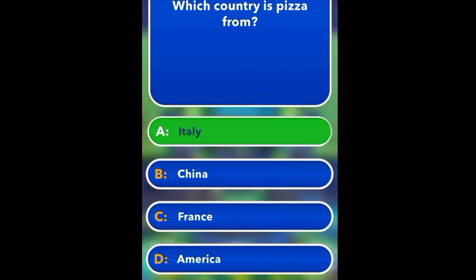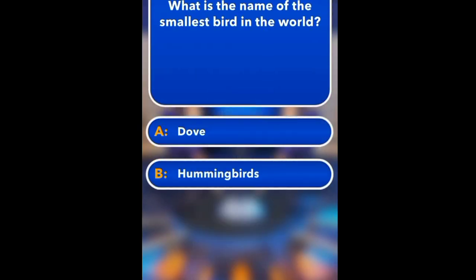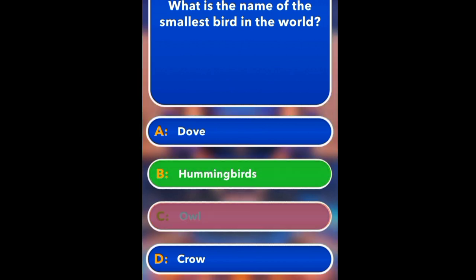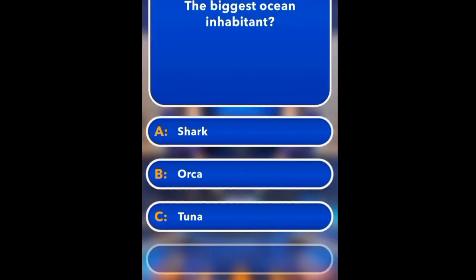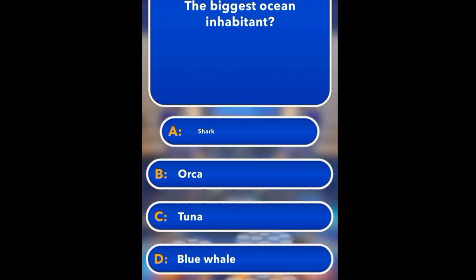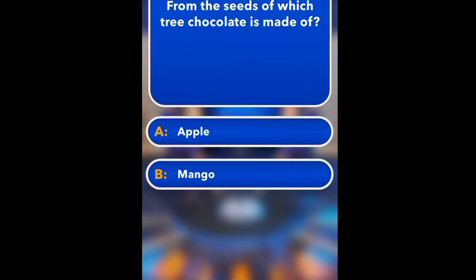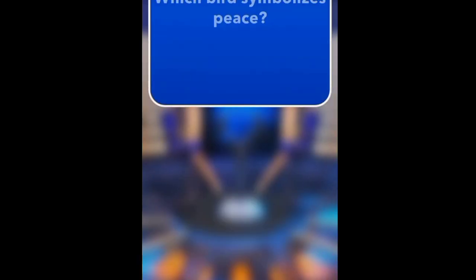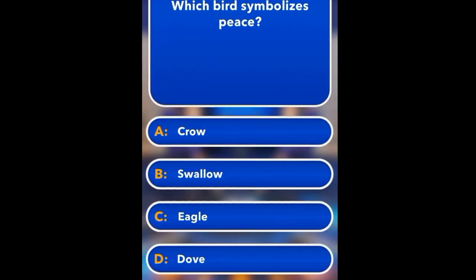What is the name of the river that flows through London? Volga, Danube, Thames, Amazon. Thames. The Grand Canyon is found in which country? China, USA, Denmark. USA.